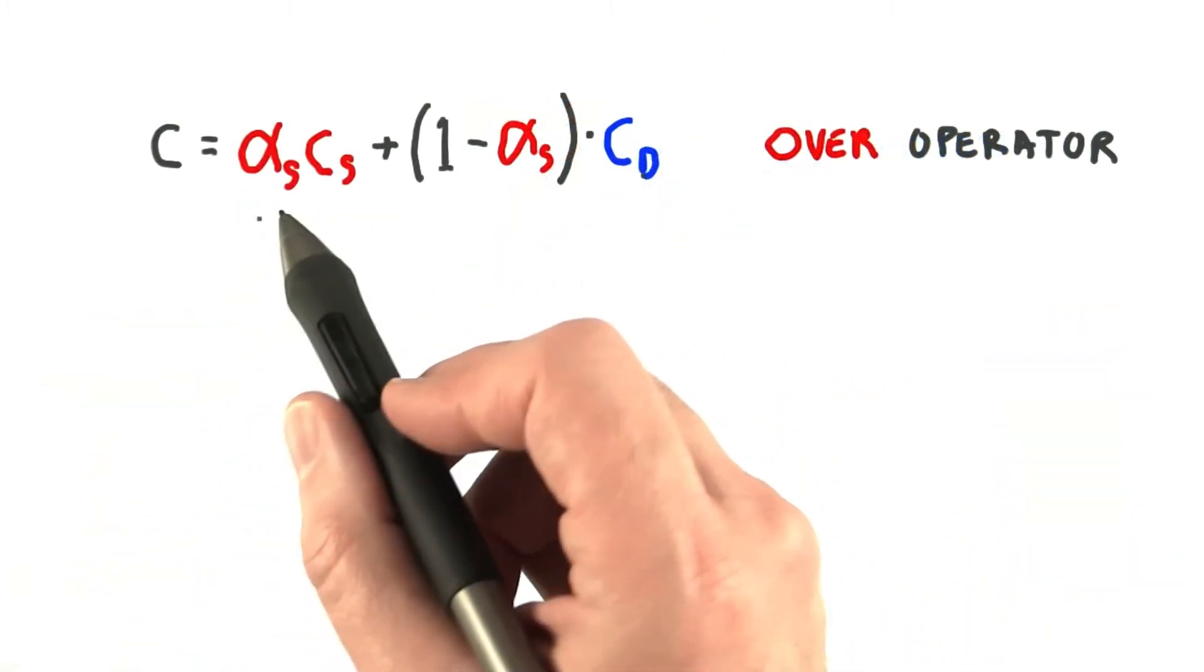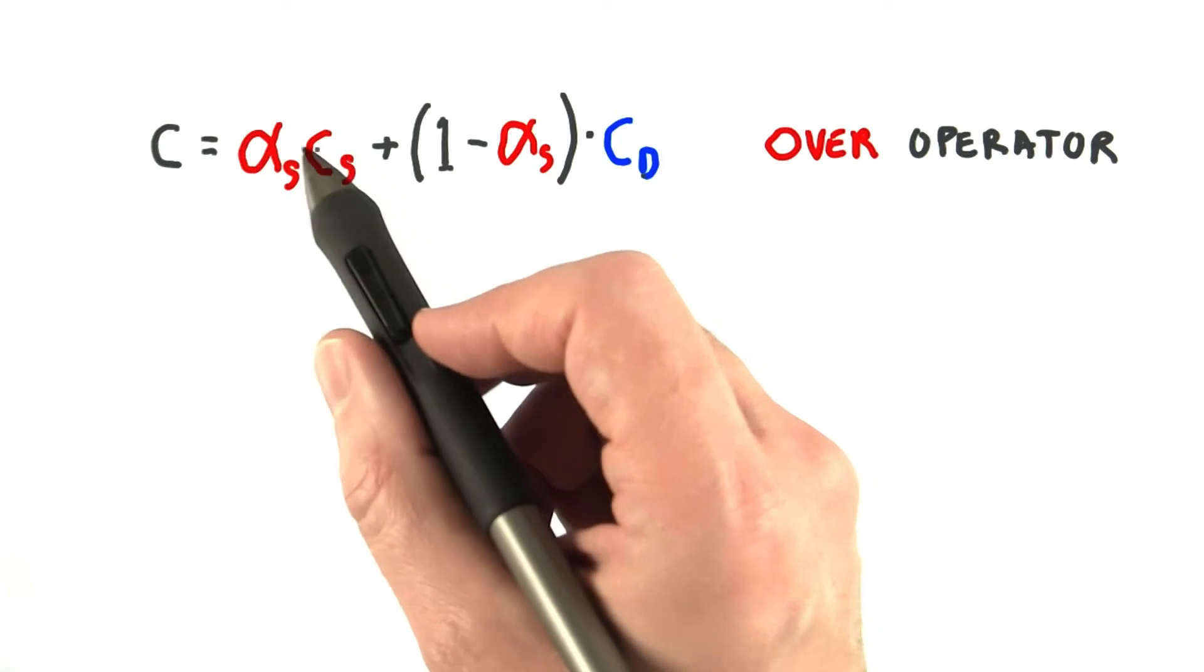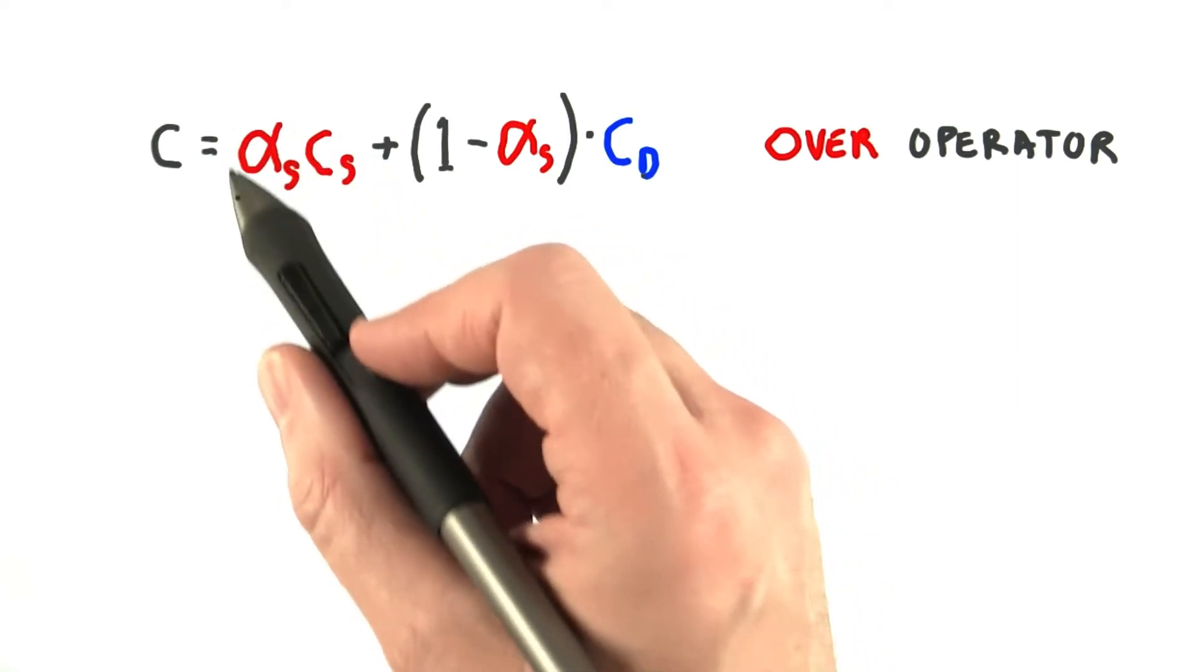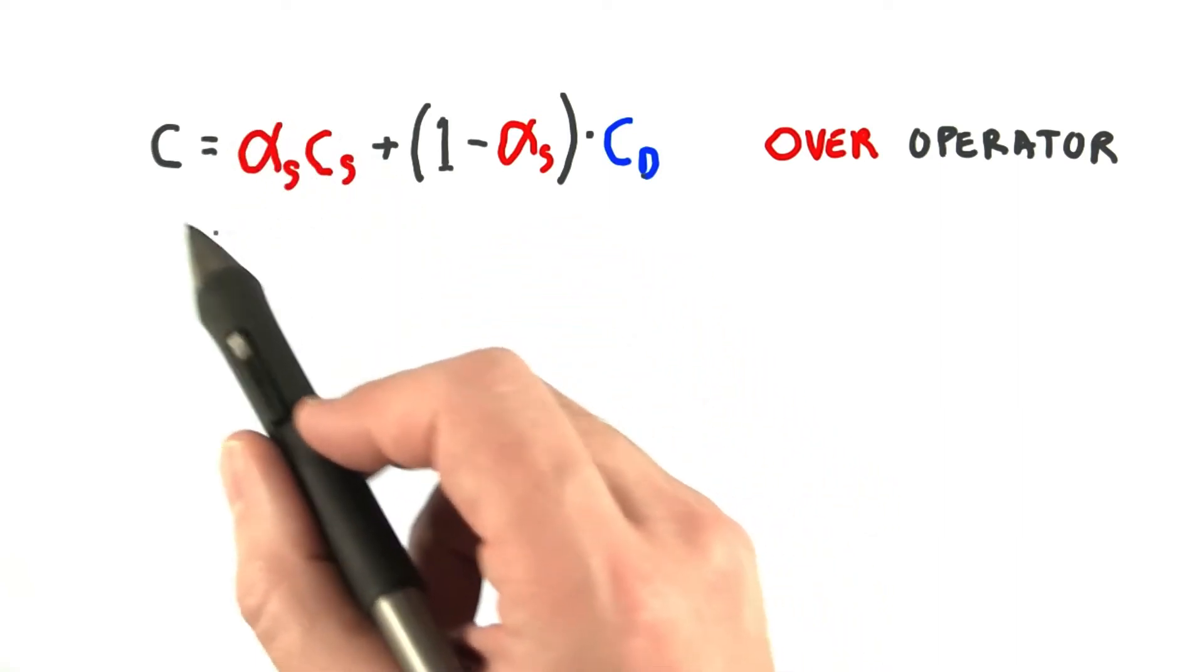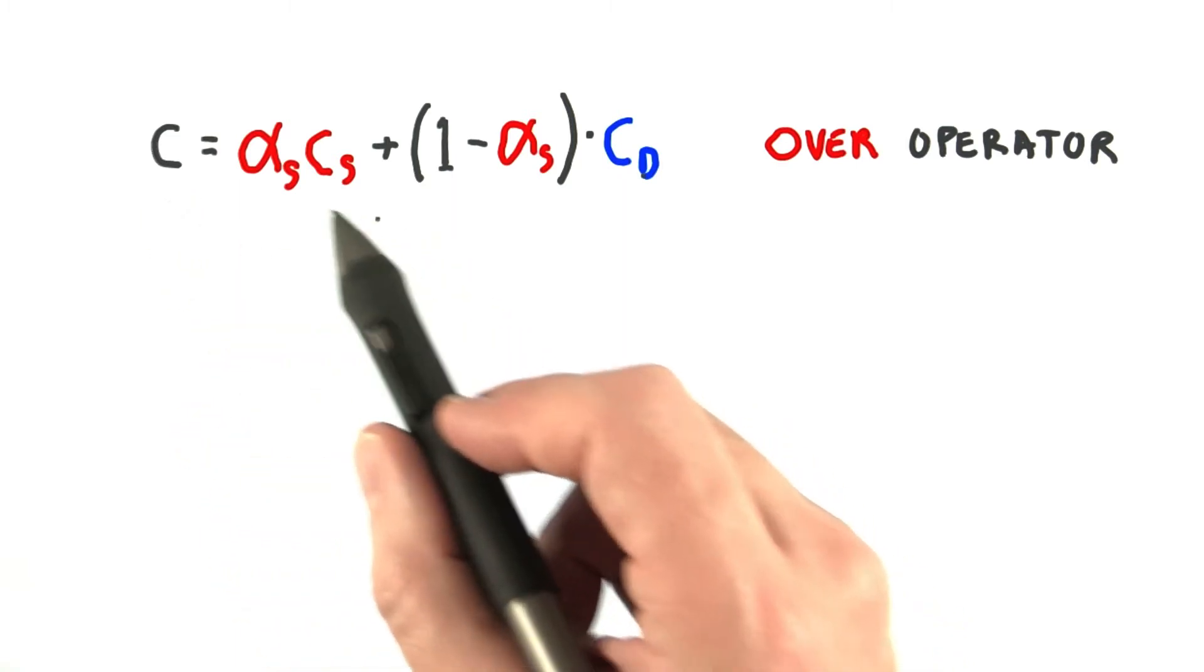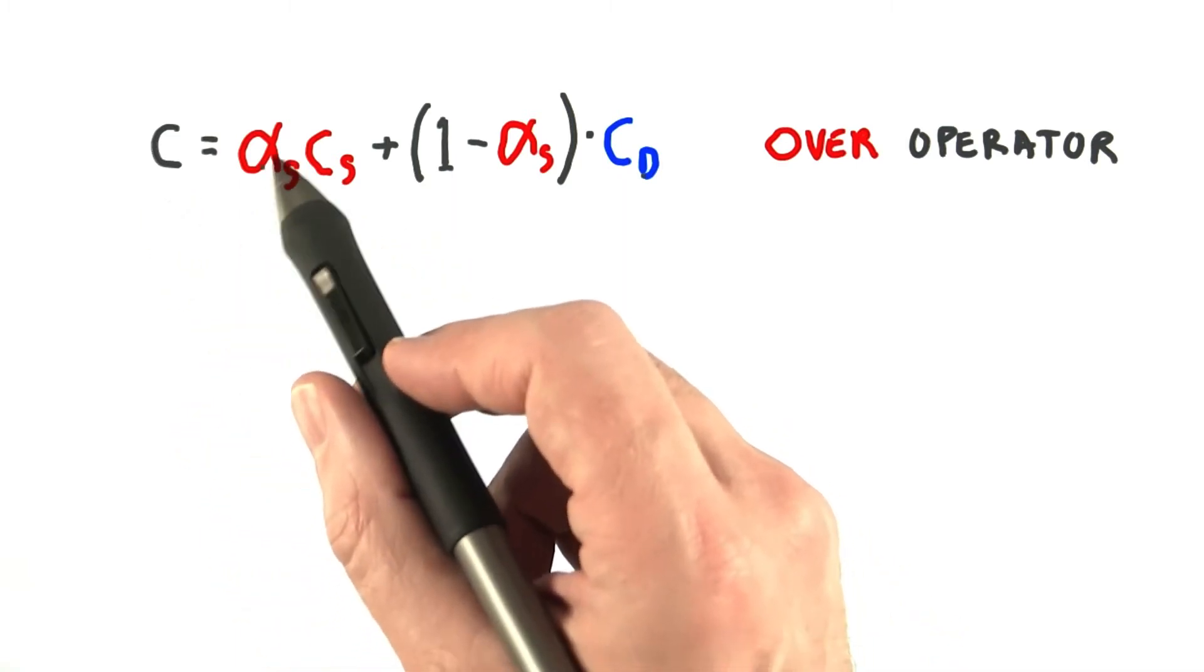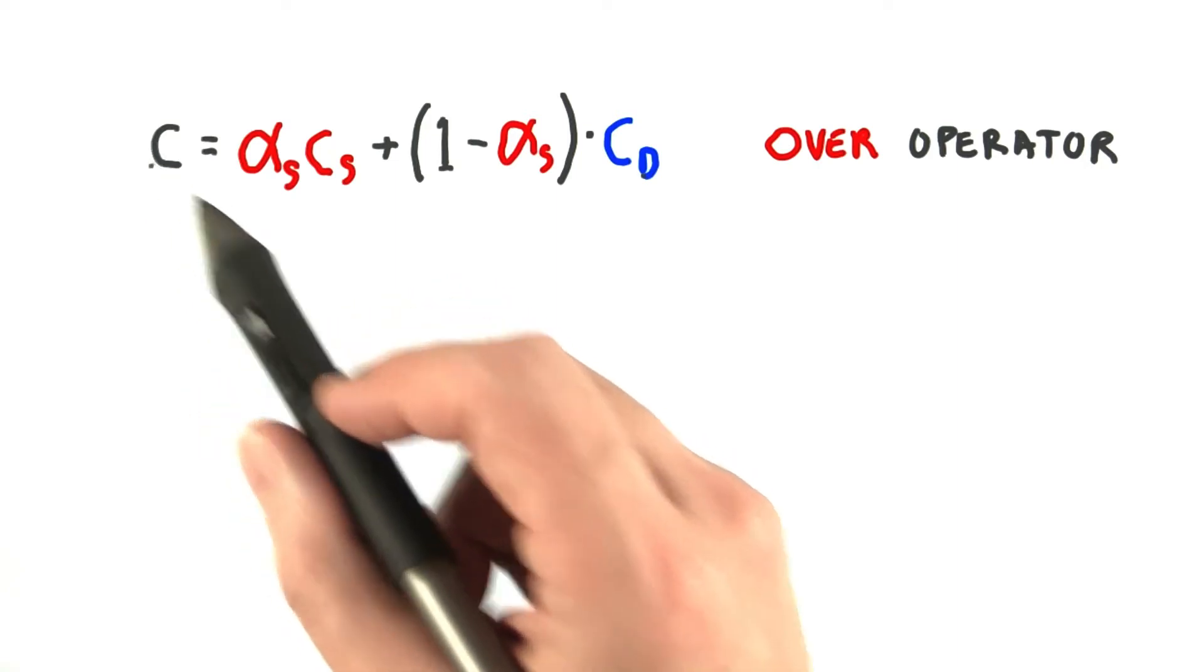A typical way to blend these colors is by using this equation. Here, the color of the source, of our filter, is multiplied by the source's alpha. This gives how much the source will affect the final color. The larger alpha is, the more the source color affects the final color.